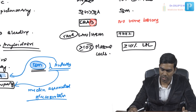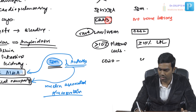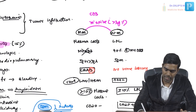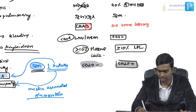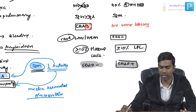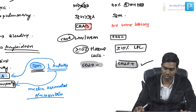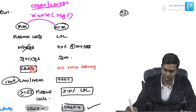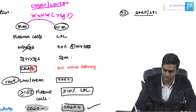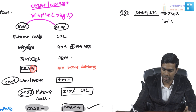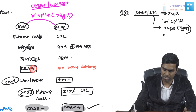Immunophenotyping is important: lymphoplasmacytic lymphocytes in Waldenström's are CD20 positive, which is critical. Both conditions can be CD38 and CD138 positive. However, plasma cells in multiple myeloma lose CD20 and are CD20 negative, whereas LPL cells in Waldenström's are CD20 positive. For investigations, serum protein electrophoresis (SPEP) with serum immunofixation electrophoresis (SIFE) is done to identify the para-protein, confirm it is IgM, and confirm its monoclonal nature.